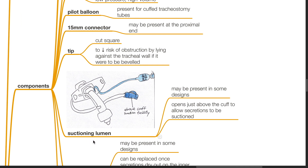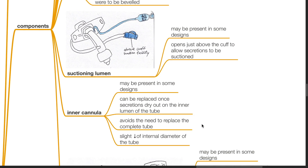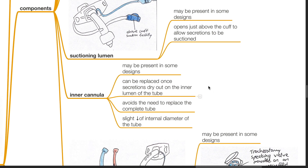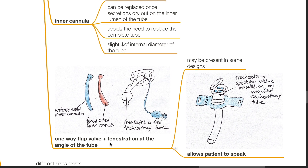The tip of the tracheostomy tube is cut square to reduce the risk of obstruction by lying against the tracheal wall if it were to be beveled. A suctioning lumen may be present in some designs, opening just above the cuff to allow secretions to be suctioned. An inner cannula may also be present, which can be replaced once secretions dry out on the inner lumen, avoiding the need to replace the complete tube, with a slight decrease in internal diameter. A one-way flap valve and fenestrations at the angle of the tube may be present in some designs and allows the patient to speak.